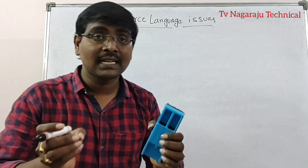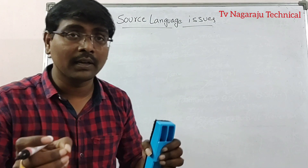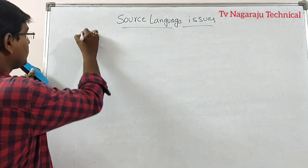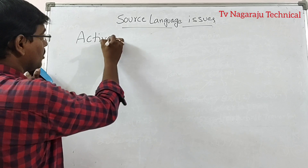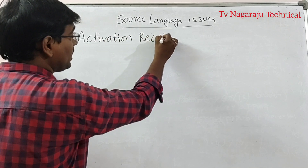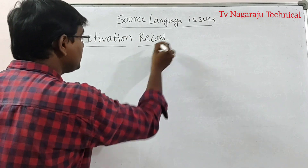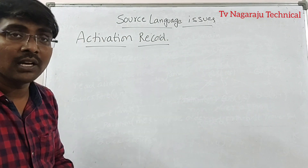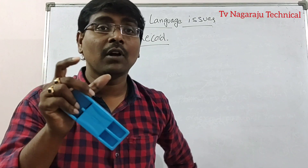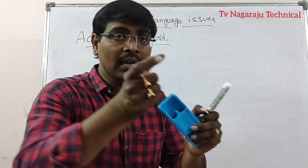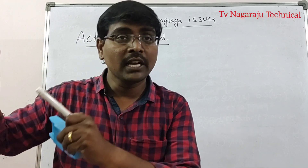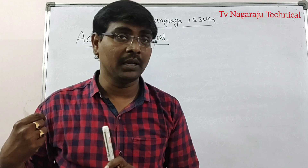We will discuss the most important thing: activation record. What is the purpose of the control stack? The control stack keeps track of the procedures whose execution is not completed.